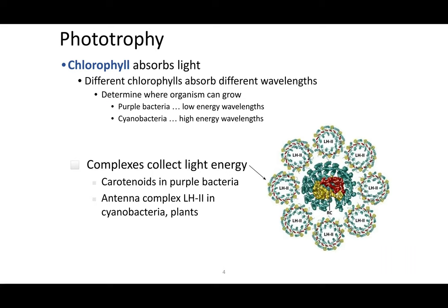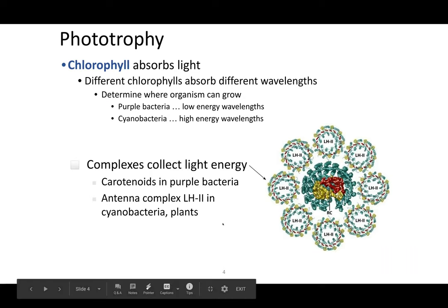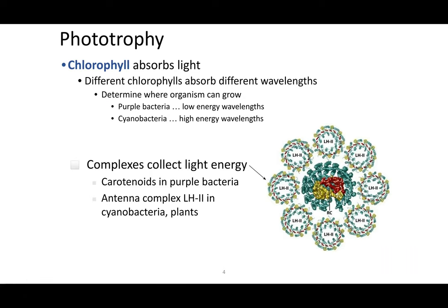There are also other types of pigments found in bacteria called carotenoids, typically found in purple bacteria. These are systems that allow bacteria to increase the efficiency of photosynthesis by absorbing non-ideal wavelengths of light, improving overall photosynthesis.